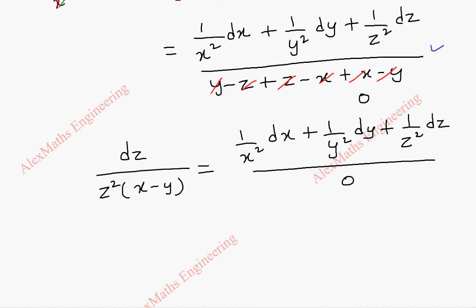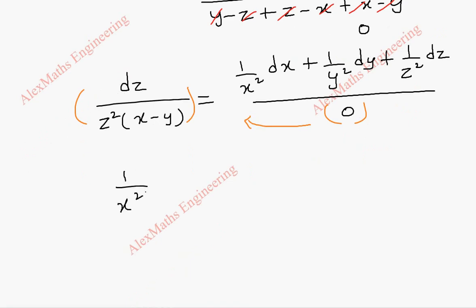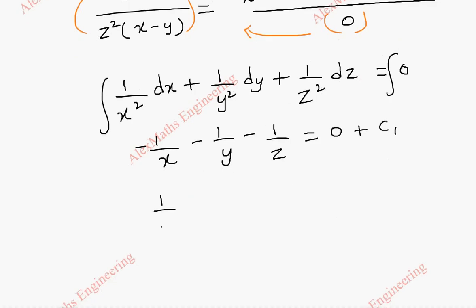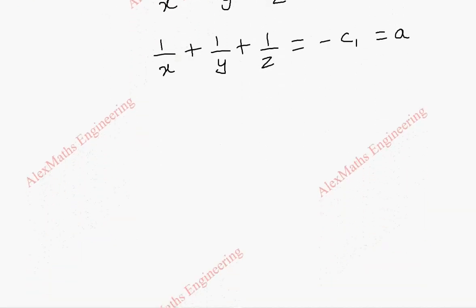When we cross-multiply, this entire term is multiplied by zero, so the left-out term is: 1/x² dx + 1/y² dy + 1/z² dz = 0. Integrating both sides gives −1/x − 1/y − 1/z = 0, with integration constant c₁. Changing the sign throughout: 1/x + 1/y + 1/z = −c₁, which we take as constant a.